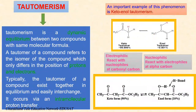Tautomerism is a dynamic equilibrium between two compounds with the same molecular formula. They differ only in the position of a proton and electron. The carbon skeleton of the compound is unchanged, but functional groups are different. This reaction involves simple proton transfer in an intramolecular fashion. An important example is keto-enol tautomerism, which refers to a chemical equilibrium between the keto form — a carbon structure containing an alpha-hydrogen — and the enol form — a double bond adjacent to an alcohol.